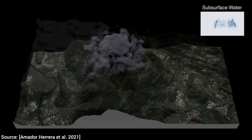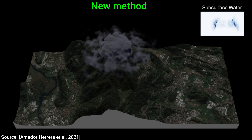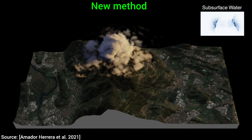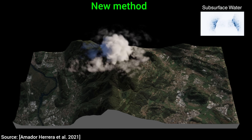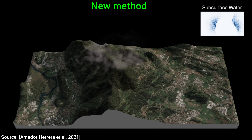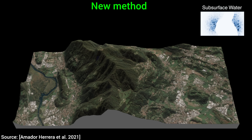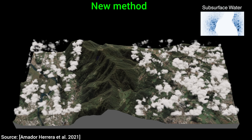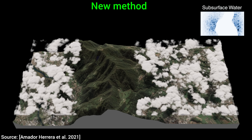And here, you also see another example of a proper phase change simulation where the rainwater flows down the mountain to the ground, and the new system simulates how it evaporates. Wait for it. Yes, it starts to form new clouds. So good.